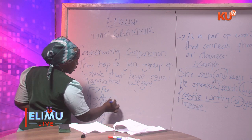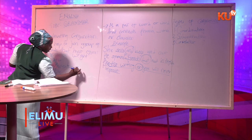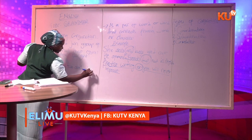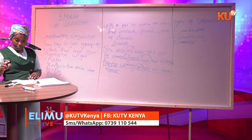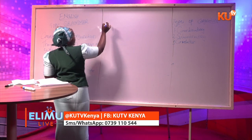'And' helps us to join similar ideas. We use 'and' to join two similar ideas. For instance, if I say 'John and Mary are in form one,' I've used 'and' to join two similar ideas.